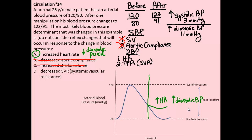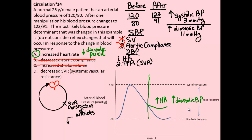It appears that A is the correct answer, but let's look at D to understand why it's incorrect. In that case, we've decreased the systemic vascular resistance or TPR. Looking at the big picture of the heart, systemic vascular resistance depends primarily on the constriction of arterioles.